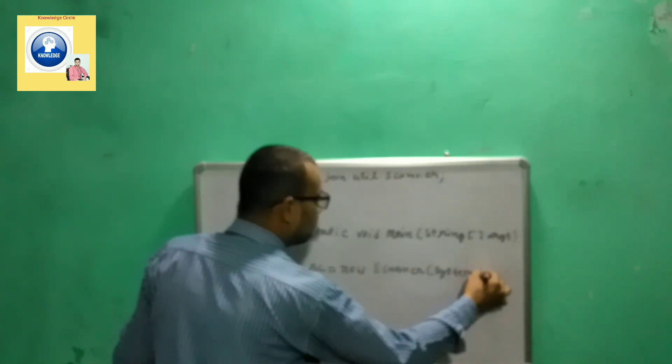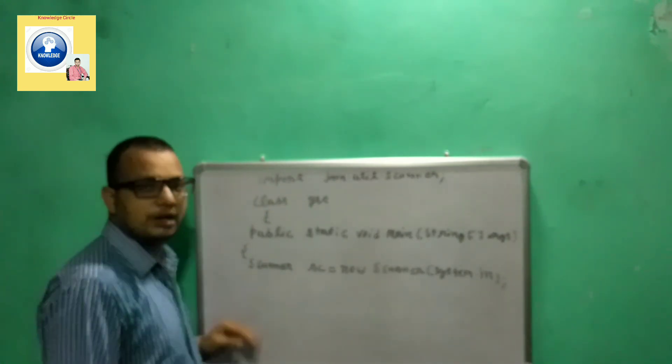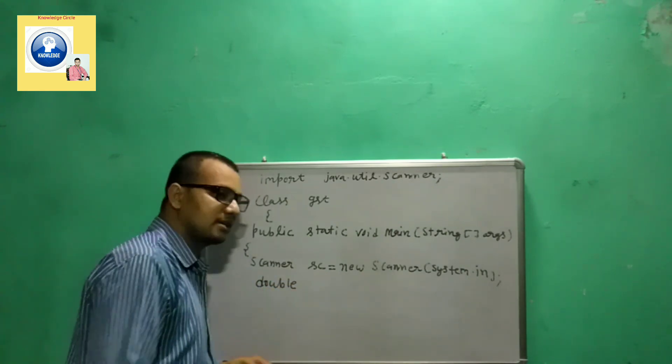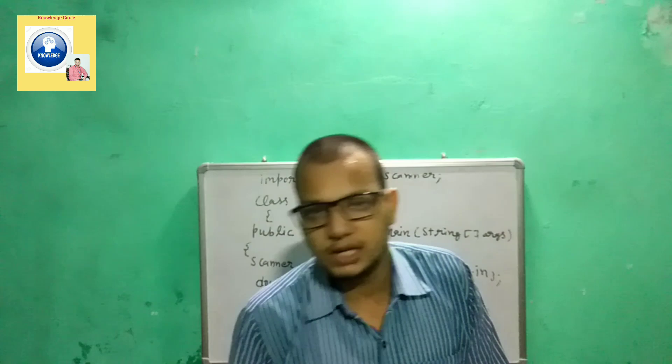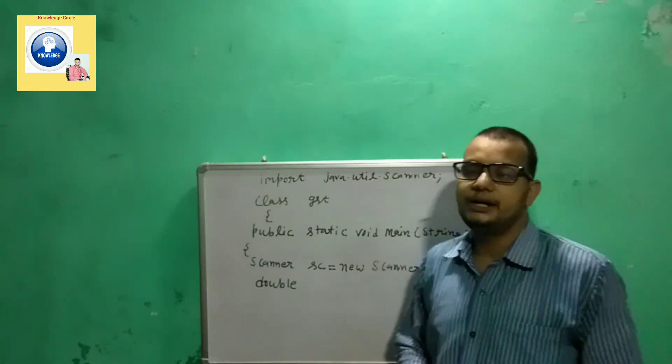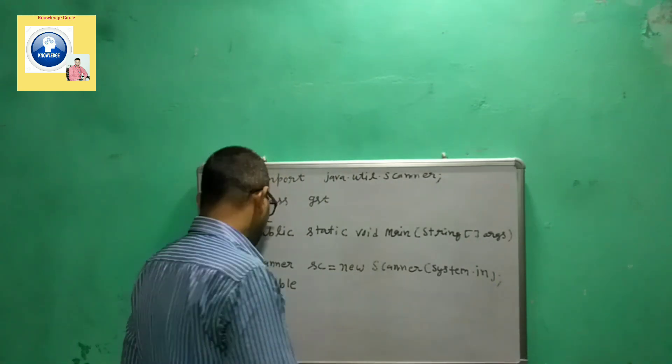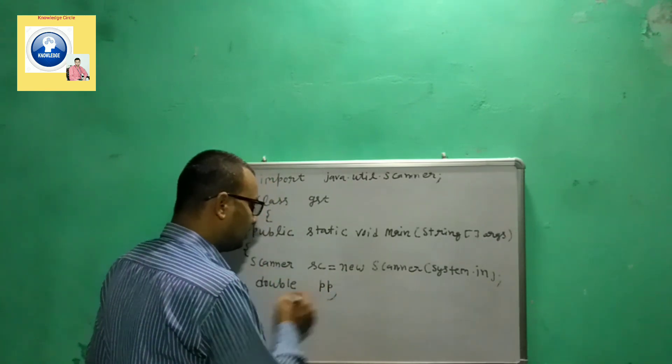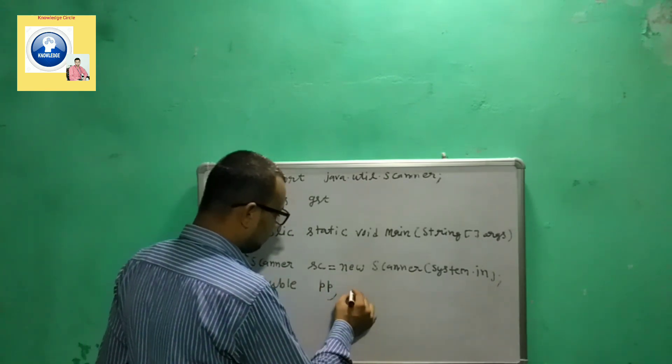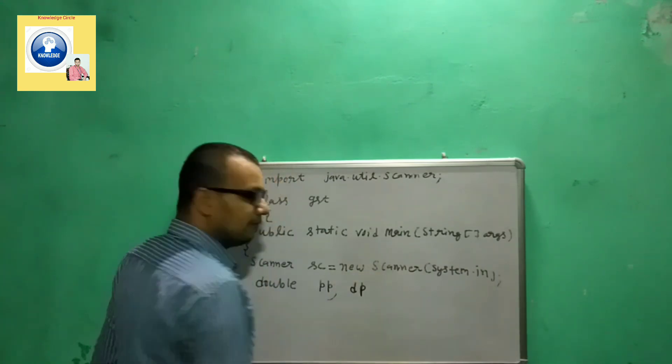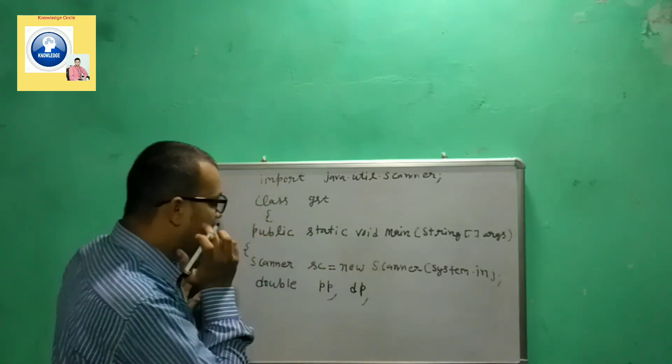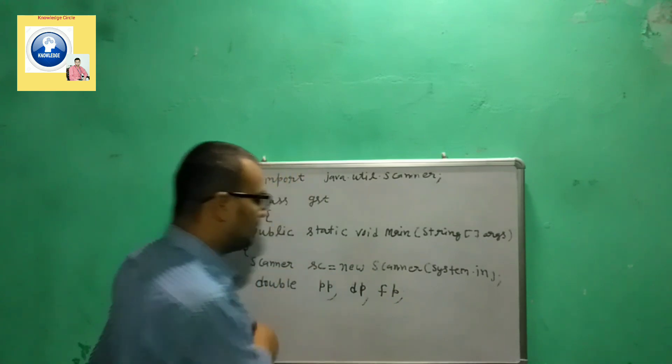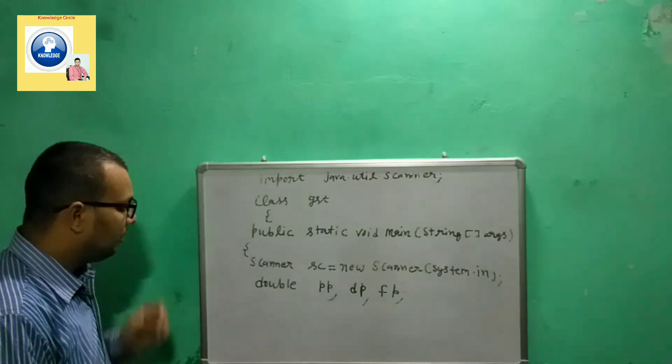It's time to declare the variables. Because there is chance that while calculating discount and GST amount the value may come in decimal form, we will be writing: the printed price PP, then discount price DP, and then final price FP. We will have three variables.